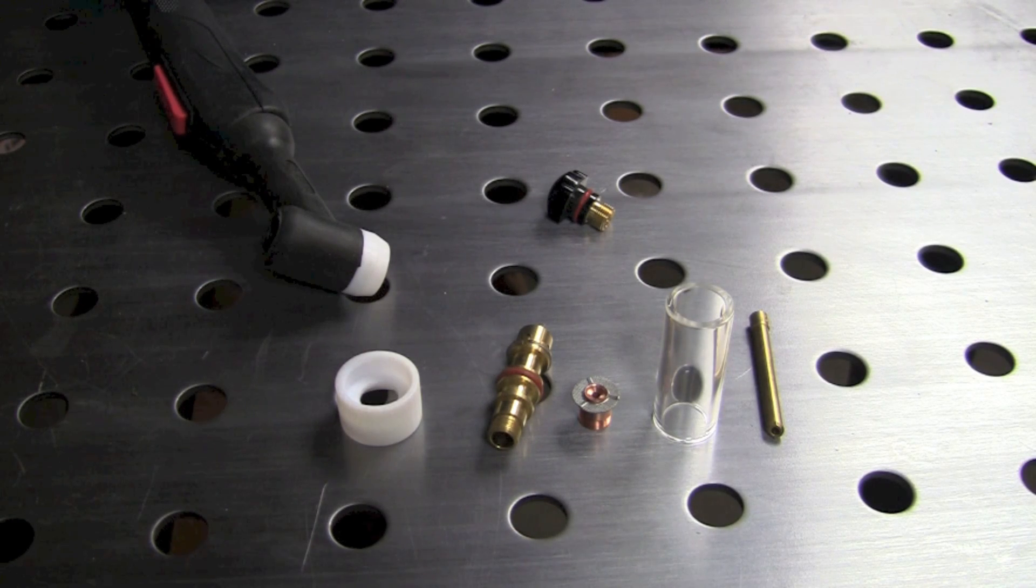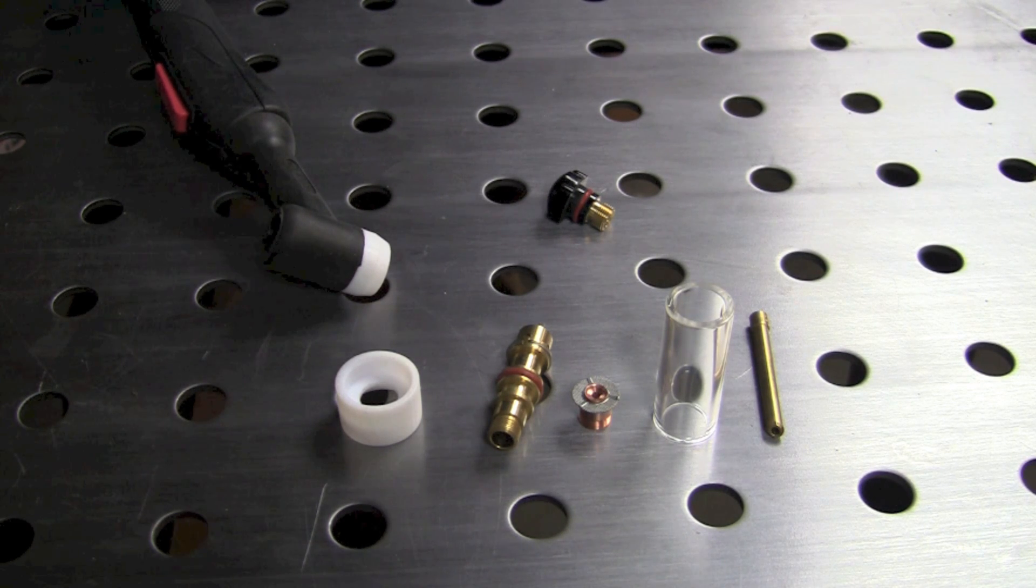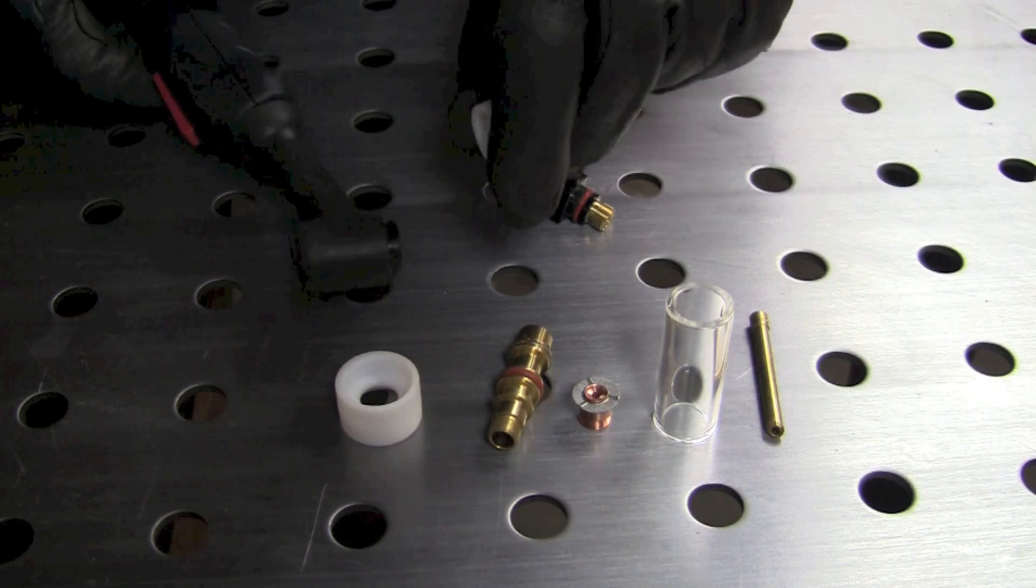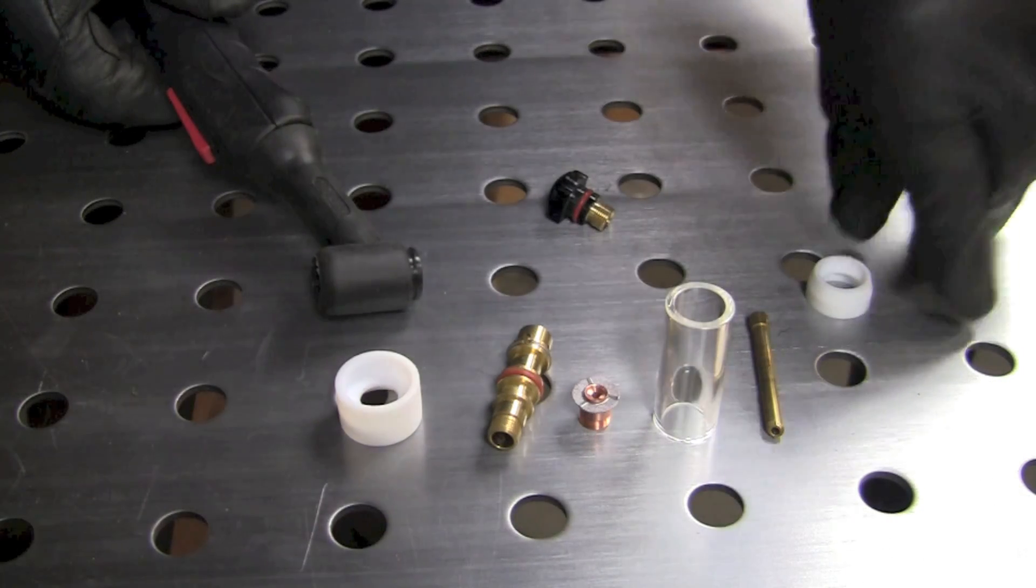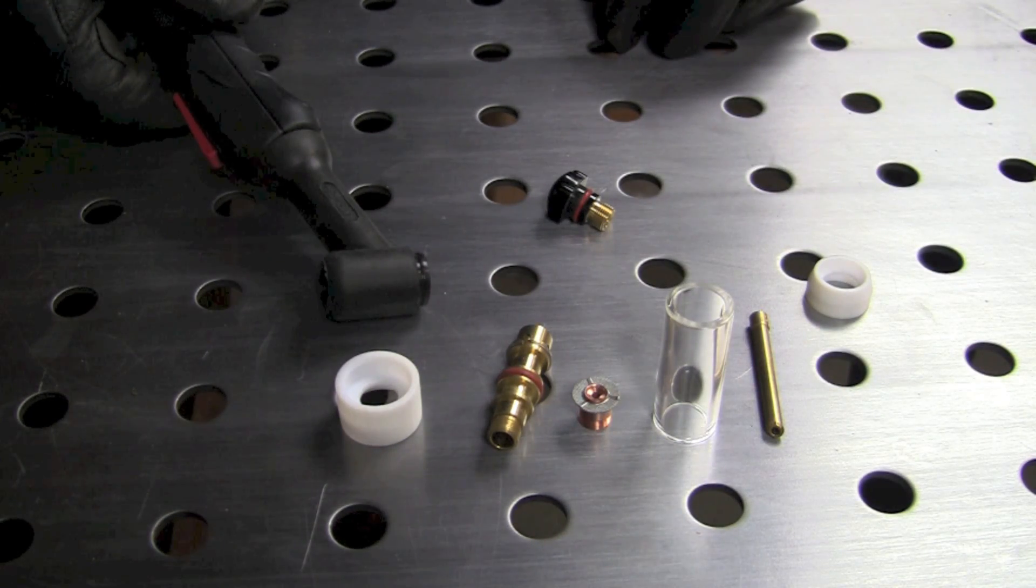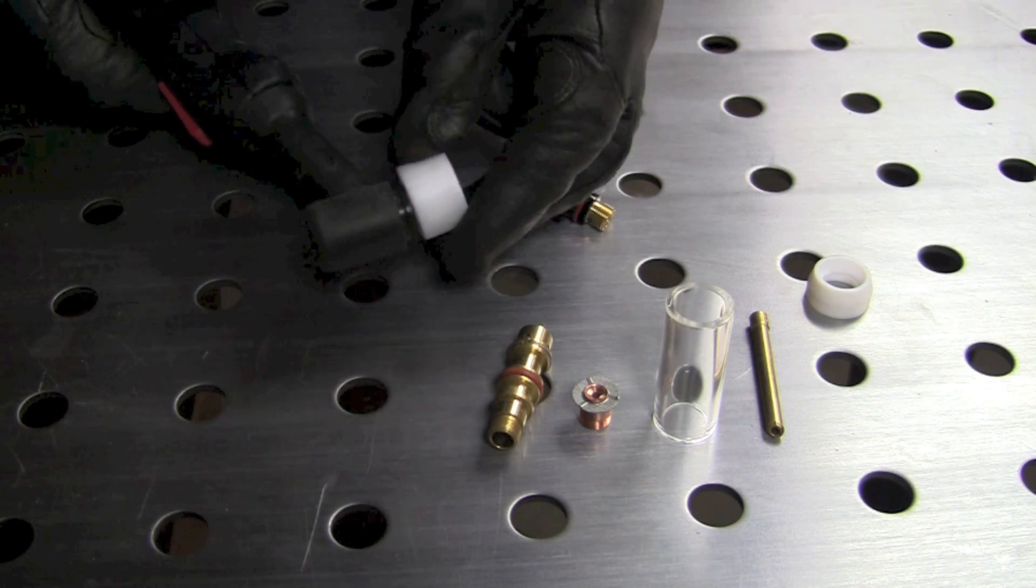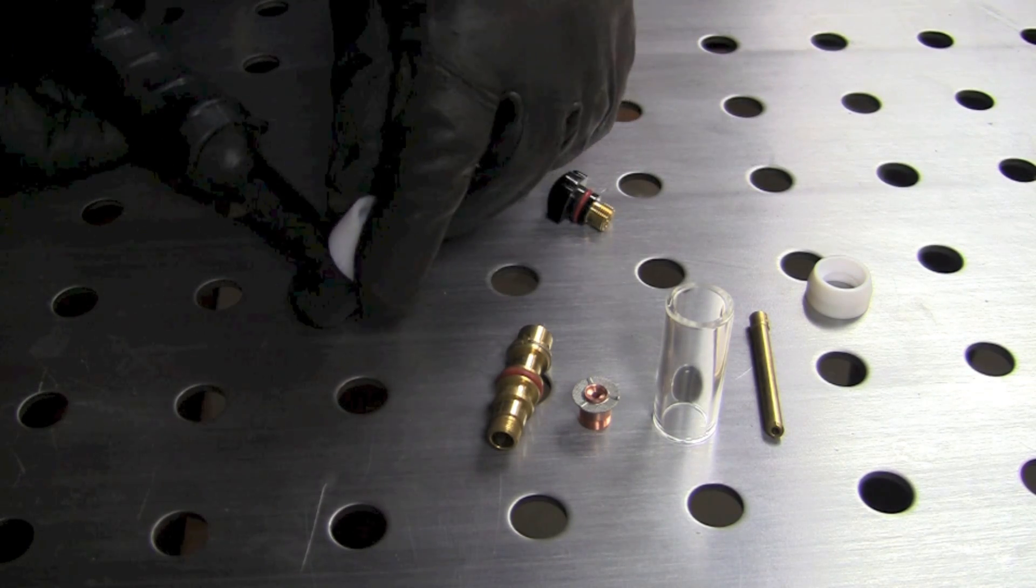Okay, so now we're going to convert our torch over to using the CK Worldwide Gas Saver kit. The first thing we need to do is remove that existing Teflon insulator and take that off. We're going to use the one that they supplied and stick that on the torch right there.